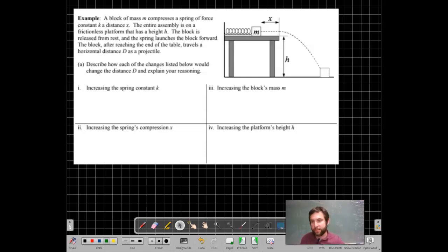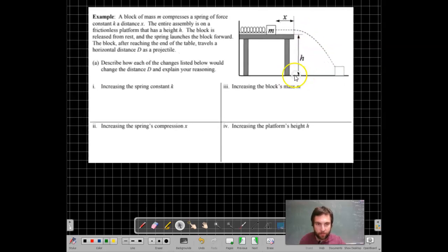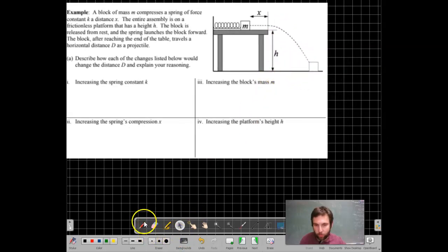Let's keep analyzing the situation and see what happens to the horizontal distance that this block will travel as we alter some of these parameters in this situation. So this is the distance there, the horizontal displacement.